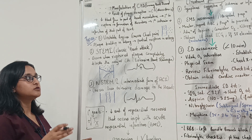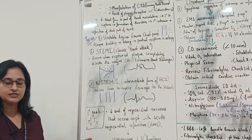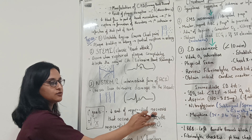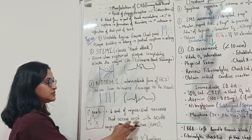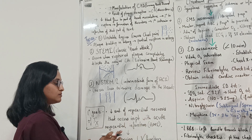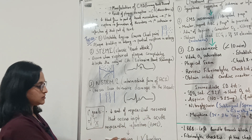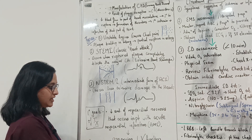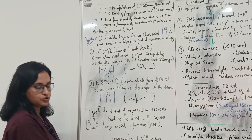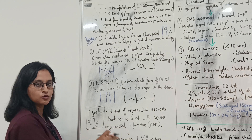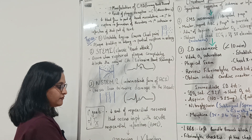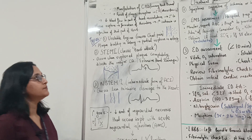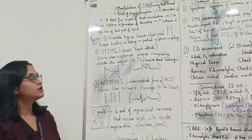The primary goals of ACS treatment are: reduction in the amount of myocardial necrosis occurring in patients with acute myocardial infarction, preserving left ventricular function, preventing heart failure, and limiting other cardiovascular complications.